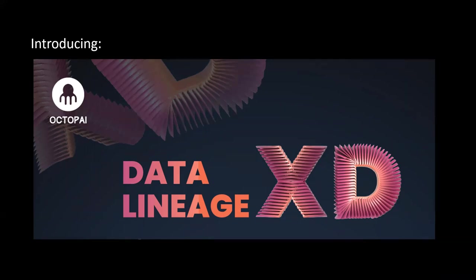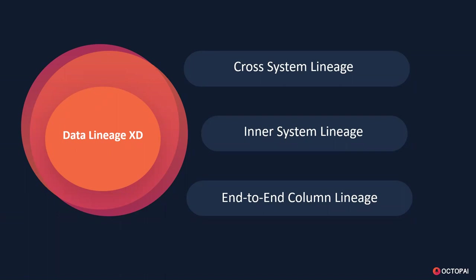Thank you Shannon, thank you David for an interesting presentation. I'm very excited to be here today and to introduce you to Octopi's data lineage XD, which is actually the first platform on the market to provide advanced multi-dimensional views of data lineage. So what is multi-dimensional views of lineage? First, we have cross-system lineage, which provides end-to-end lineage at the system level from the entry point into the BI landscape all the way to the reporting and analytics — providing high-level visibility into data flow and mapping where data is coming from and where it's going. Secondly, inner-system lineage details the column level within an ETL process, a report, a database object, and so on. And then there's end-to-end column lineage, which details the column-level lineage between systems from the entry point all the way through to reporting and analytics.